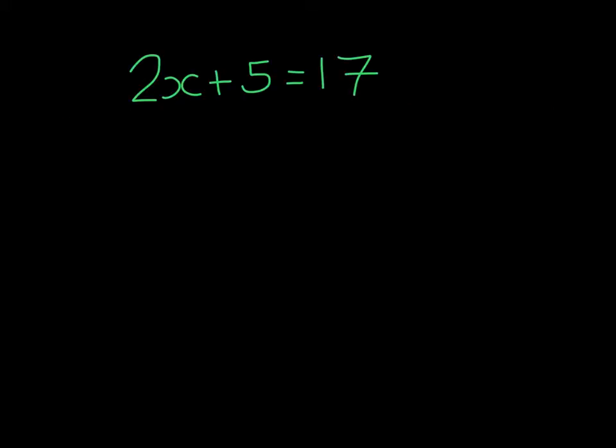When we perform the two inverse operations, we will do them one after the other. We do not do them at the same time. As we can see here, two things are happening to x. We are multiplying it by two, and we are also adding five. Now the question is, which inverse operation should I do first?